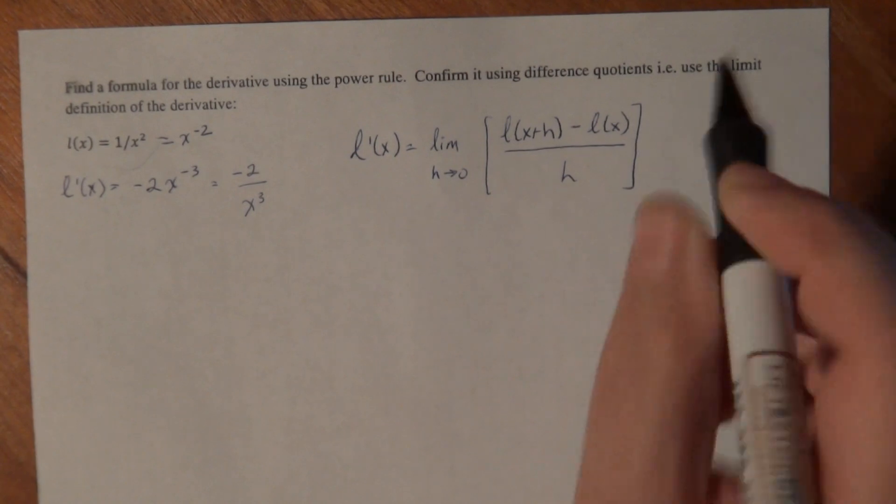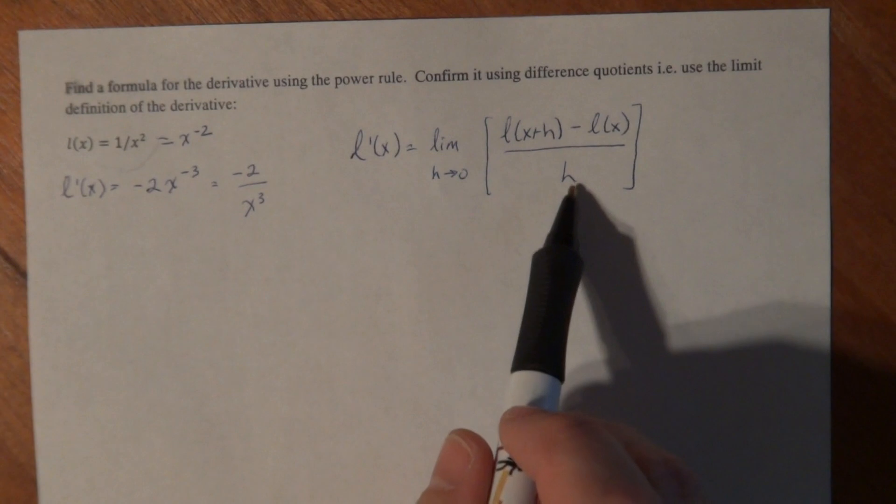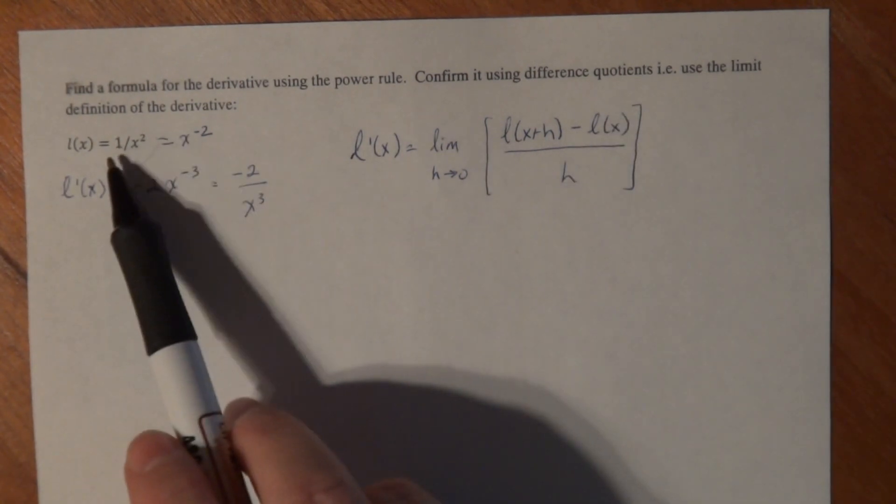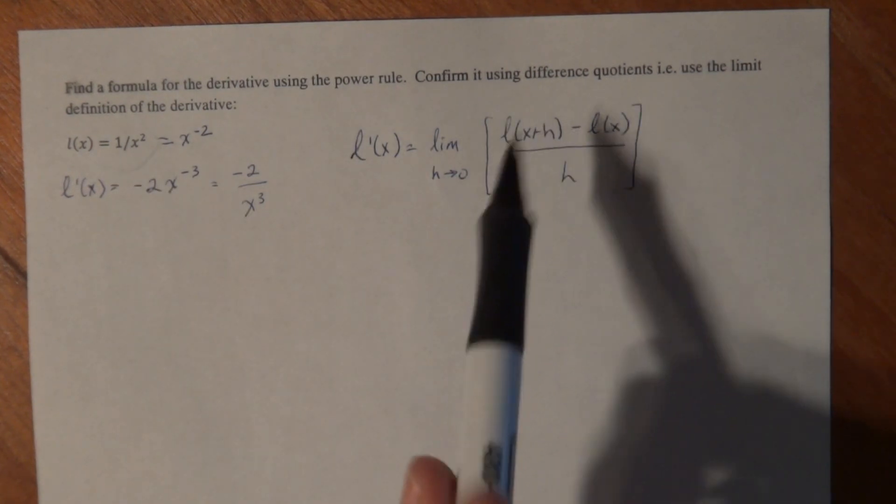All right, so there's three things that need to go here. h just stays h, and don't forget to write it every time until you take the limit. And L of x, I'm going to substitute in 1 over x squared. And L of x plus h,